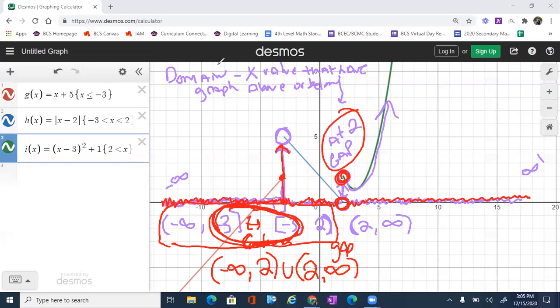Now we could also say the domain goes from negative infinity all the way to positive infinity except 2. 2 is the only exception because that was the point that did not have a value on the x-axis, that did not have any graph above or below it.